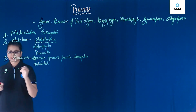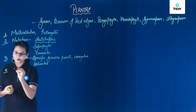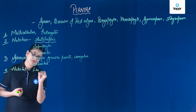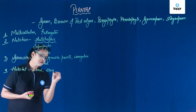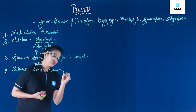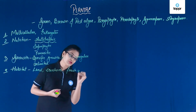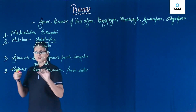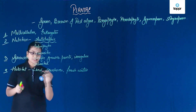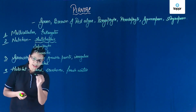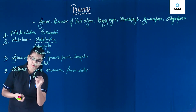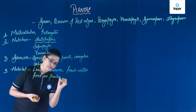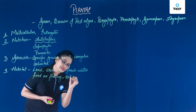Next, when we talk about their habitat or where they are found — these are found usually on land, seashores, and also in freshwater. When we learn about their mode of living, plants are usually found either standing fixed, or they can be floating. Some plants can be found submerged as well.